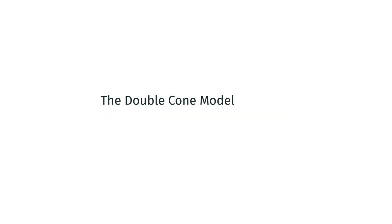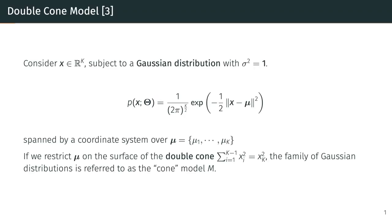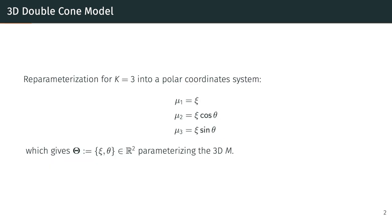Let's start with defining the double cone model. We consider a Gaussian distribution with unit variance such that the coordinate system of the parameters spans over the means. By restricting the means to be on the surface of a double cone, we define a family of Gaussian distributions as the cone model m. In the case of k equals 3, we can re-parameterize the model from a 3D Euclidean space to a 2D polar coordinate space, such that xi is the distance from the origin and theta the orientation of the cone. The singularity is located at the origin where xi equals zero.